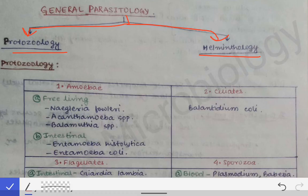Helminths are multicellular organisms while protozoa are unicellular organisms, but both of them are eukaryotic — unlike bacteria, which are prokaryotic. Parasites have cellular organelles and all the metabolic pathways present in eukaryotic organisms. The key difference is that protozoa are unicellular while helminths are multicellular organisms.